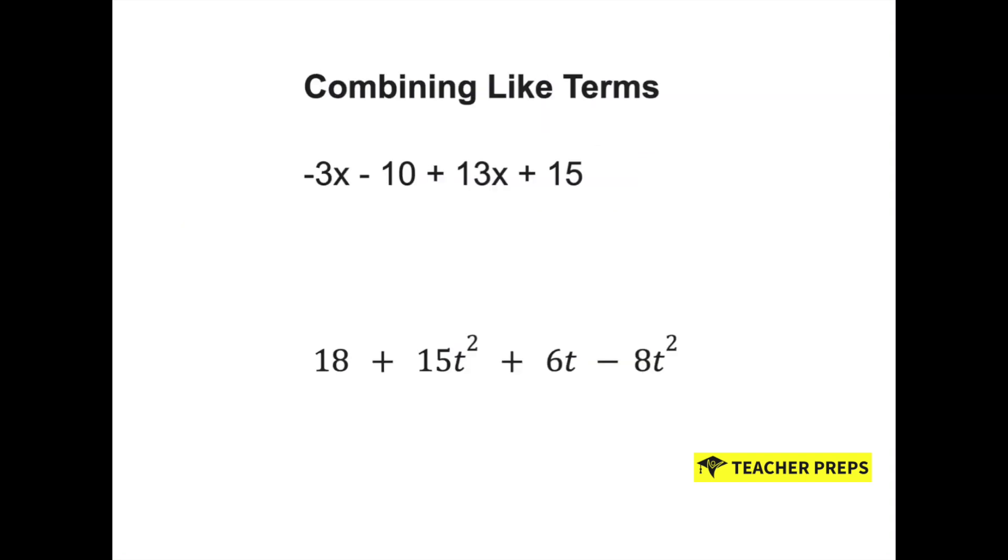The first step in creating equivalent expressions is to combine like terms. When we combine like terms, we want the sign in front of it to go with it. So for example, a minus 10 is really the same thing as a negative 10.